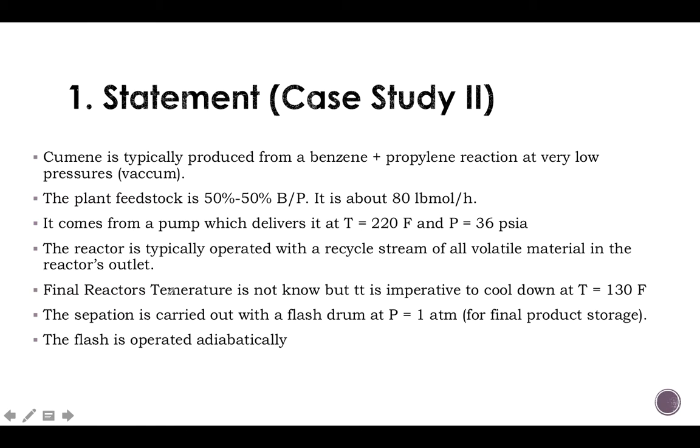So cumene is typically produced from benzene, which is an aromatic ring like this, and propylene, which is C3H6 with a double bond. Reaction at very low pressure, so almost vacuum.